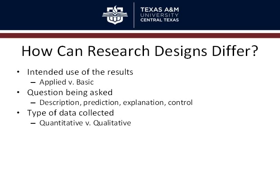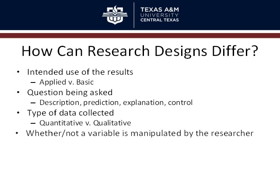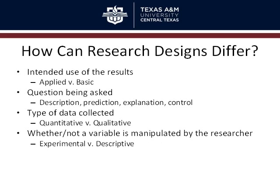One of the big ways to distinguish between types of research is depending on whether or not the researcher manipulates a variable. When you do manipulate a variable in the study, you're probably talking about experimental research. And when you're not, you're talking about descriptive research.